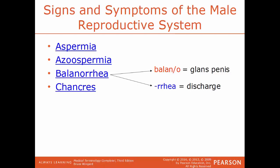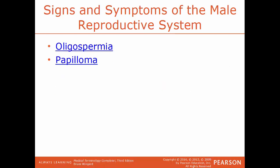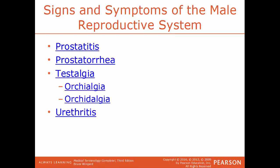Oligospermia is a male fertility issue where there's a low amount of sperm concentration within the ejaculate. Papilloma is a small growth that looks like a wart, found on the skin or on a mucous membrane, usually benign. Prostatitis is the inflammation of the prostate gland. Prostatorrhea is an abnormal discharge from the prostate gland. Testalgia is a pain in the testicles — other terms for this condition include orchialgia and orchidalgia; all three reference the same condition of long-term pain in the testes. Urethritis is inflammation of the urethra.